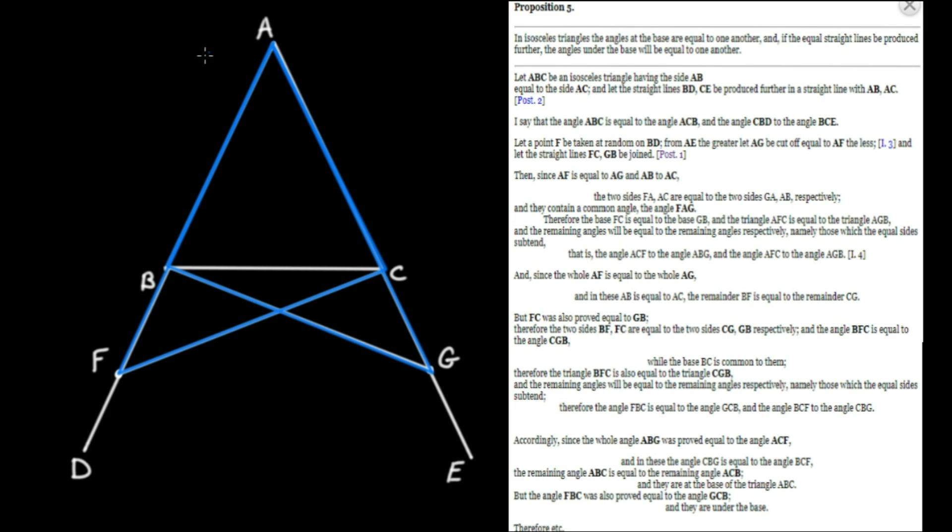FA equals GA, and AC equals AB. Using dash notation: the triangles share a common angle FAG. Notice side-angle-side — we can use Proposition 4, and we conclude that those two blue triangles AFC and AGB are equal.